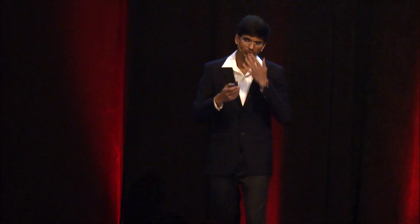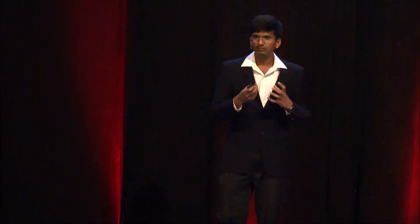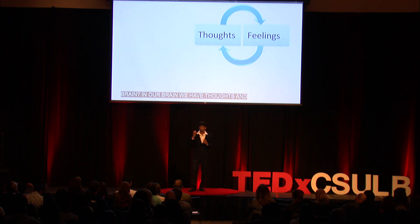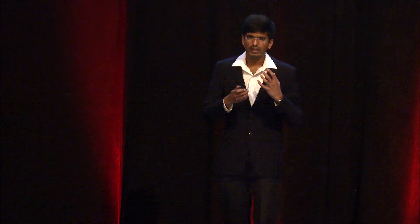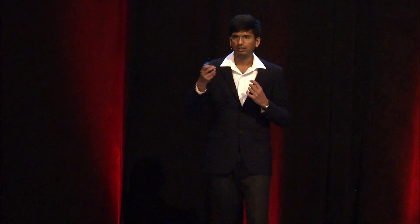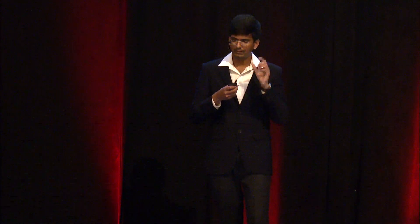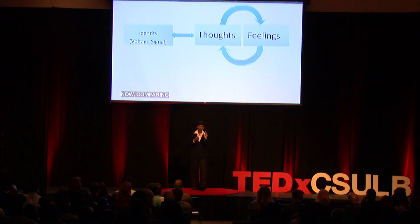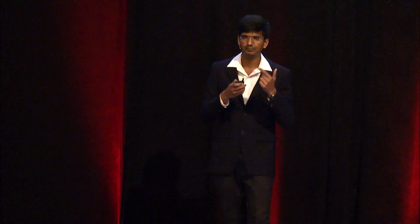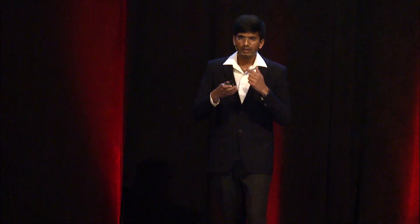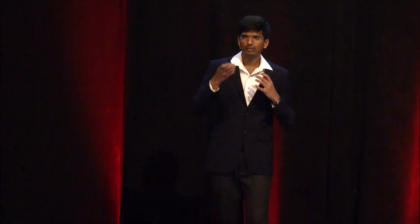How does the Memristor correlate with our brain? In our brain, we have thoughts and every thought is linked with feelings. Whenever we think of something, we have a feeling associated with it — every feeling is a result of a thought. Whenever we think, there is some kind of identity of that thought which stores in the form of a voltage signal. Comparing this voltage signal of our thought with the magnitude of applied voltage in the Memristor, and the time interval for which the voltage pulse was applied with our feelings, we can relate these two.